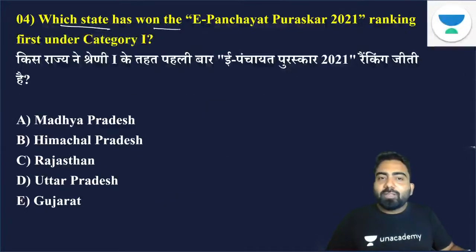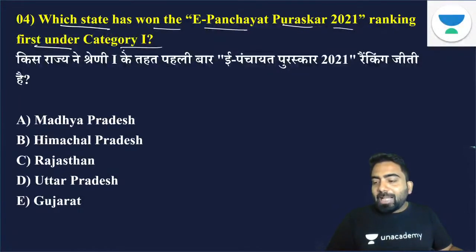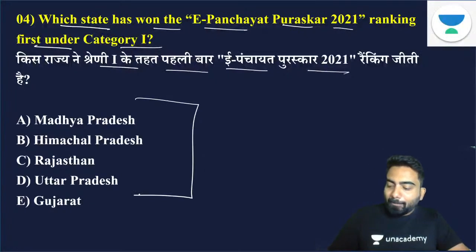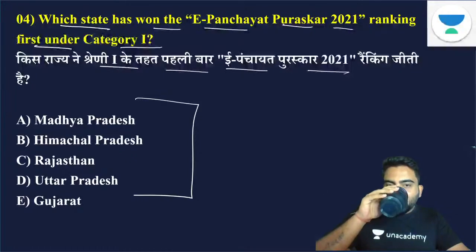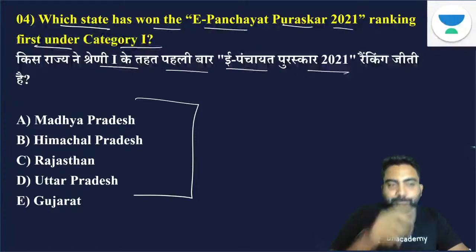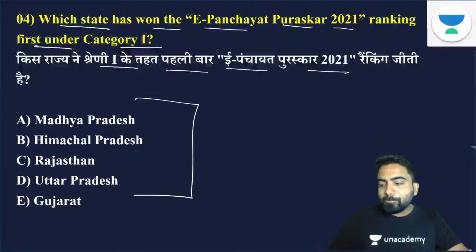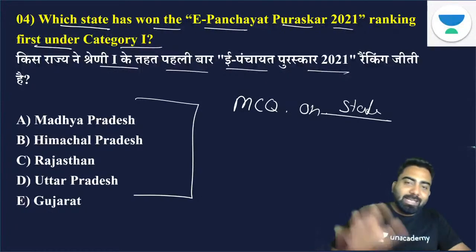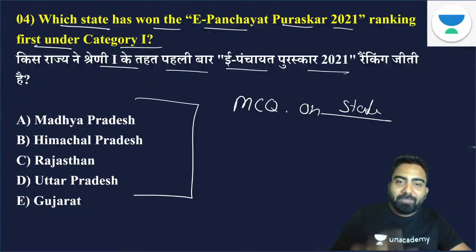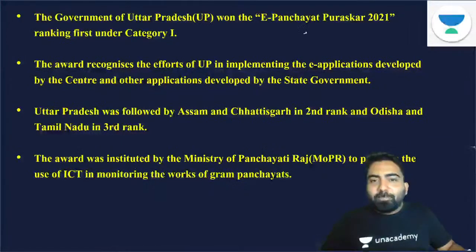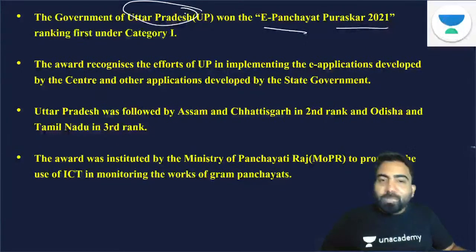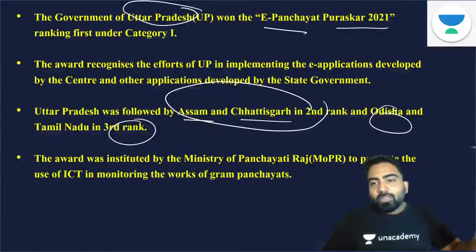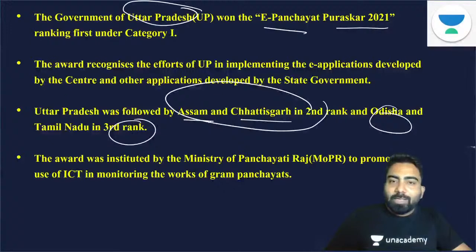Which state has won the E-Panchayat Puraskars ranking first under category 1? The answer is Uttar Pradesh — option D is the right answer. This is the 5th Puraskars. UP ranked 1st, Assam and Chhattisgarh ranked 2nd, and Odisha and Tamil Nadu ranked 3rd.